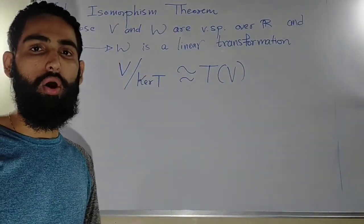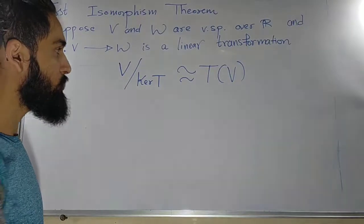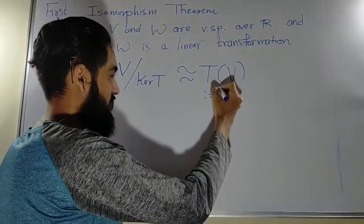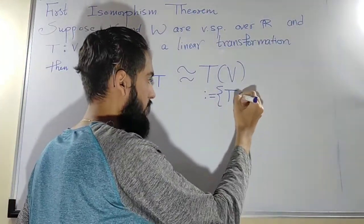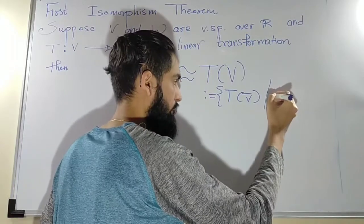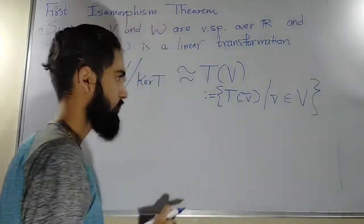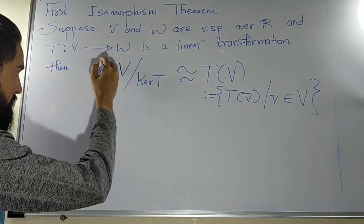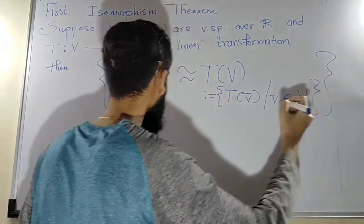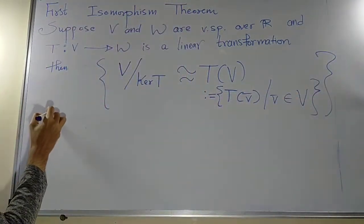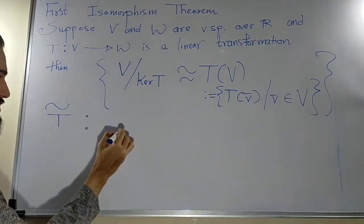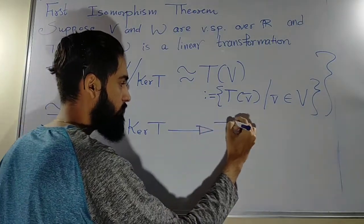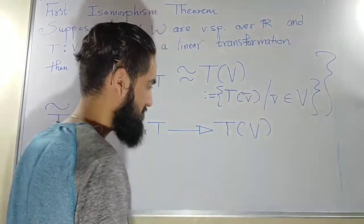That means I want to say the range of T, or the image of T. If I want to define T(V), it is nothing but the set of all elements of the form T(v̄) where v̄ is an element of V. To elaborate this statement further, I will write that T̃ is a function from V modulo kernel(T) to T(V), that means the image of T.